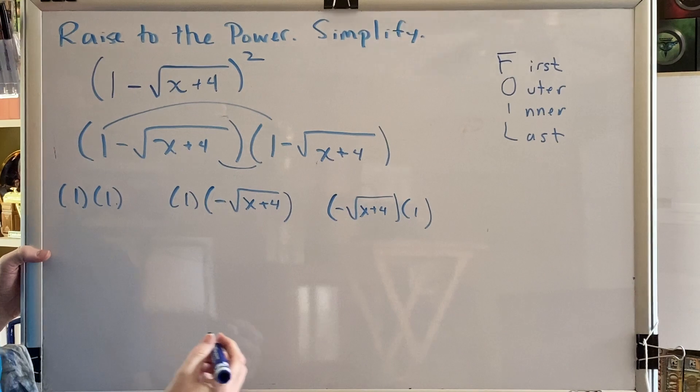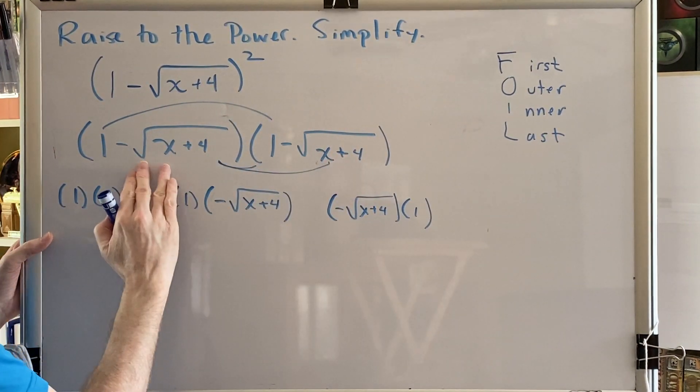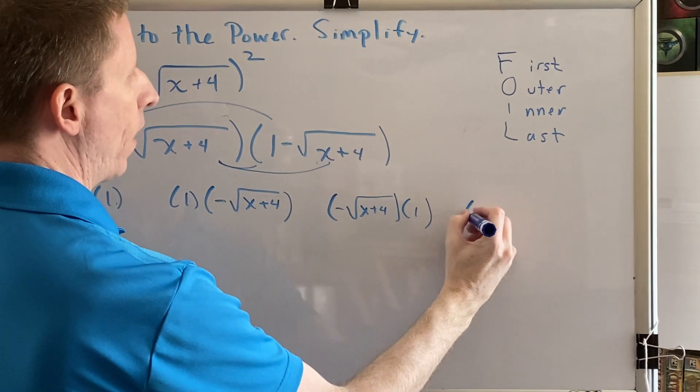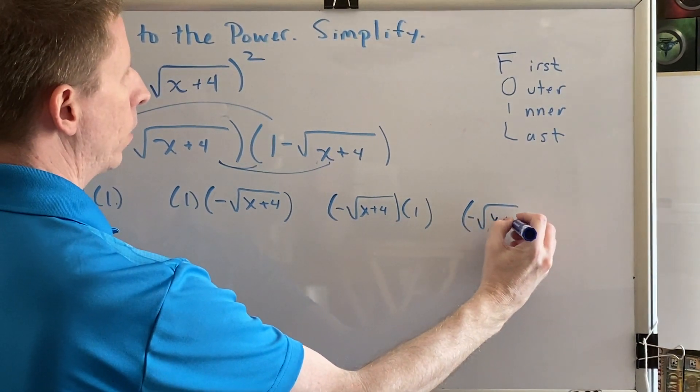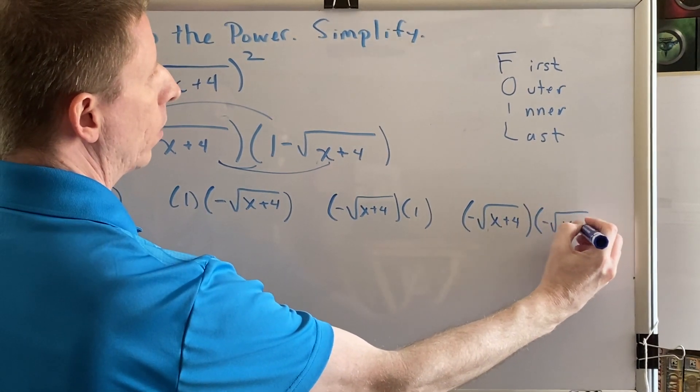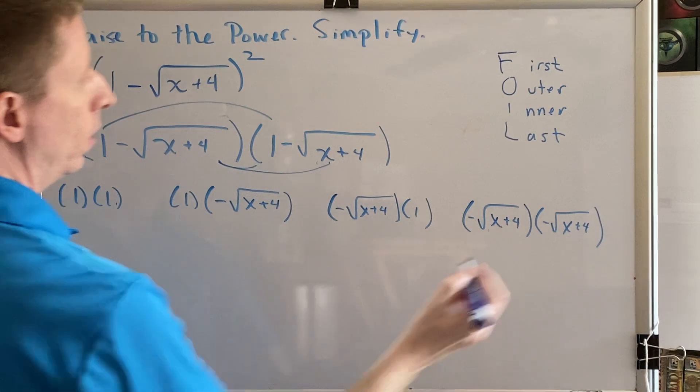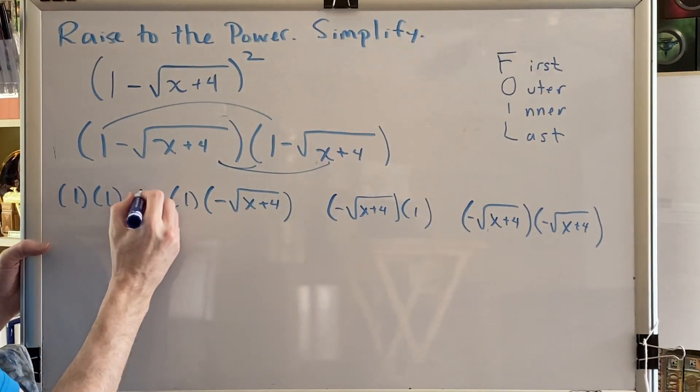And finally, last, which would be the things that are at the end of each pair of parentheses, which is this subtracted radical times this subtracted radical. Both subtraction signs become negative. So I have negative radical times negative radical. So here are my four product pairs. In between each one, I need to put a plus sign.